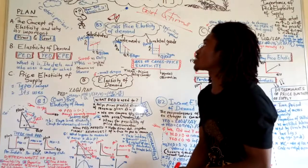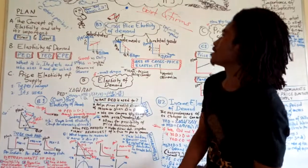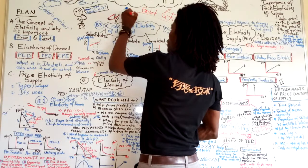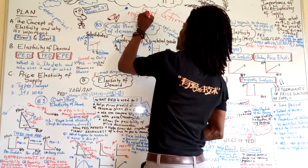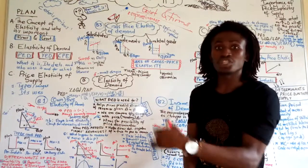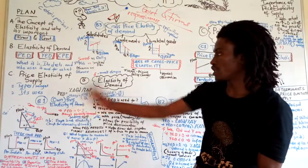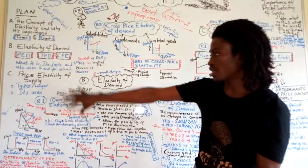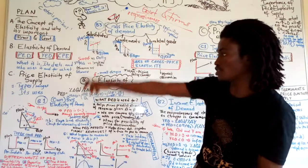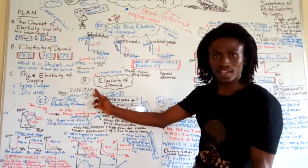But what is elasticity in the first place? Elasticity is simply the responsiveness — in general, it talks about the responsiveness of some economic variable to changes in another variable. So in the case of the elasticity of demand, we look at price elasticity of demand: to what extent, how responsive is the quantity demanded of a product given a change in the price of that good?